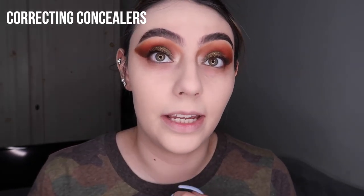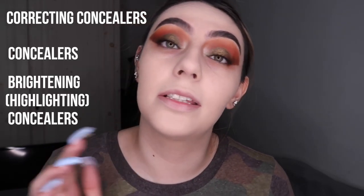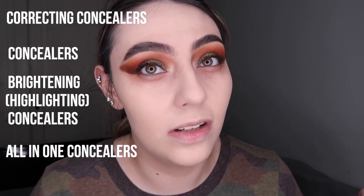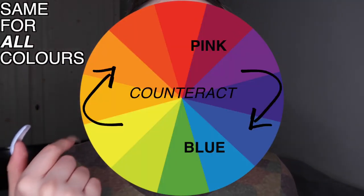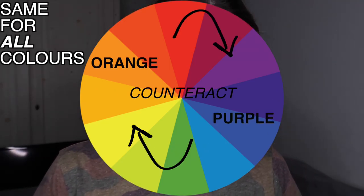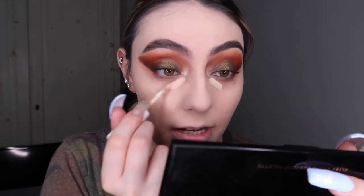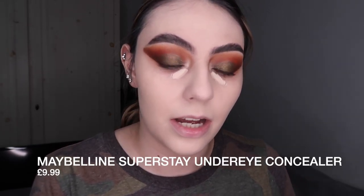What you really want to understand is the difference between correctors, skin-tone concealers, and brightening concealers. Generally with concealing, you have a correcting one — for me that would be a pink shade. Looking at the color wheel, pink shades counteract blue tones. I'm focusing on concealers that correct as well as conceal, so they mask things like blue-toned dark circles under the eye.